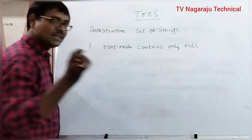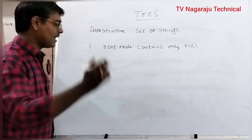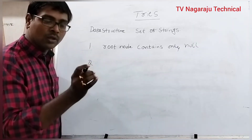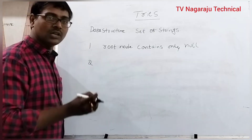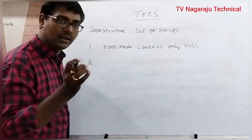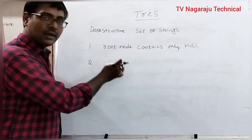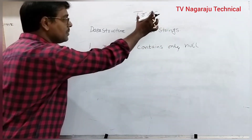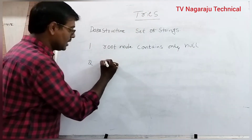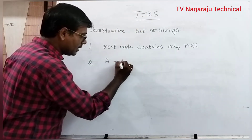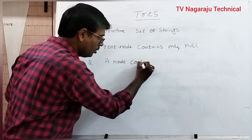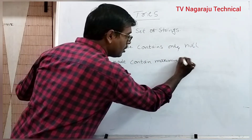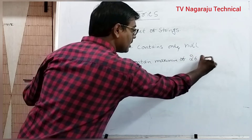Null means it does not contain any character. Consider a node — a node can have children. For example, in a binary tree, a node can contain a maximum of two children. In the same sense, in a trie, a node can contain a maximum of twenty-six children.